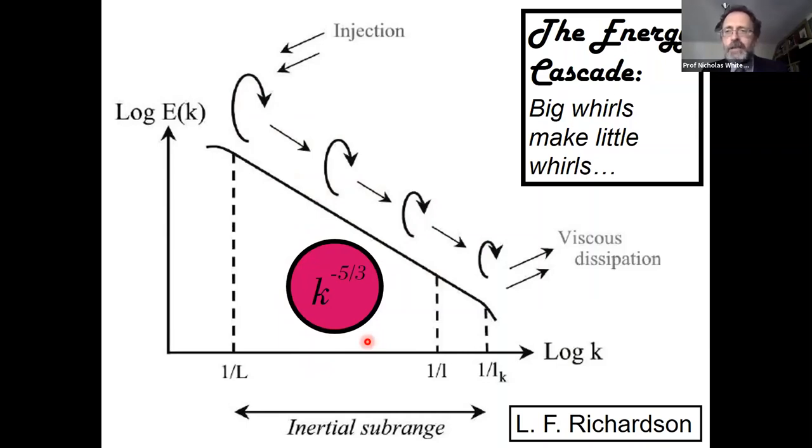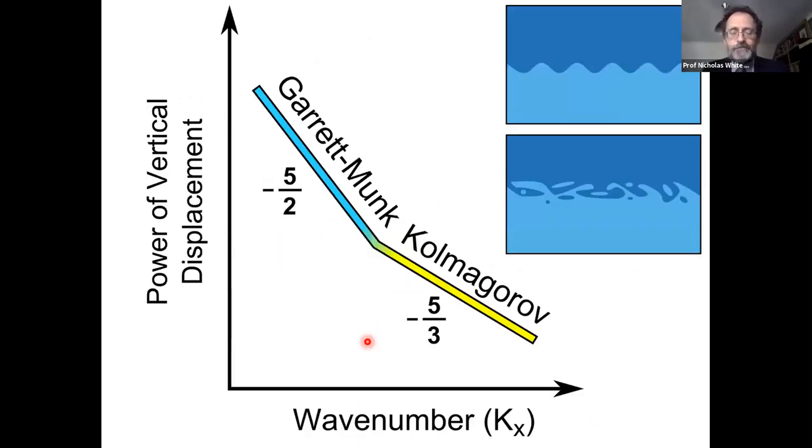This may be a ratio many of you are not familiar with, but if you mention this to fluid analysts, they go weak at the knees and their eyes begin to swim because they know exactly what that means. It's characteristic of isotropic turbulence: big whirls turning, breaking down into medium-sized whirls, breaking down into smaller and smaller whirls.